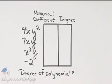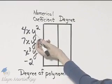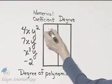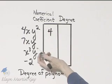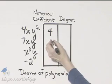So let's find the numerical coefficient and degree of these terms of a polynomial. The numerical coefficient of this term would be 4, the numerical factor. The numerical coefficient of this term is 7.